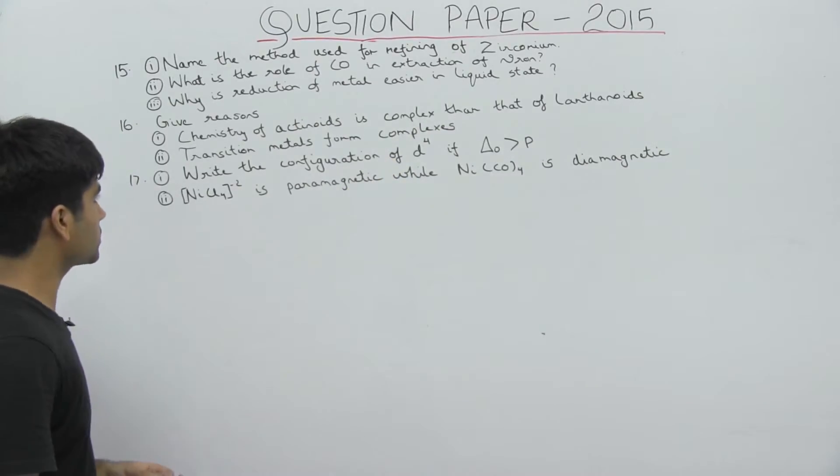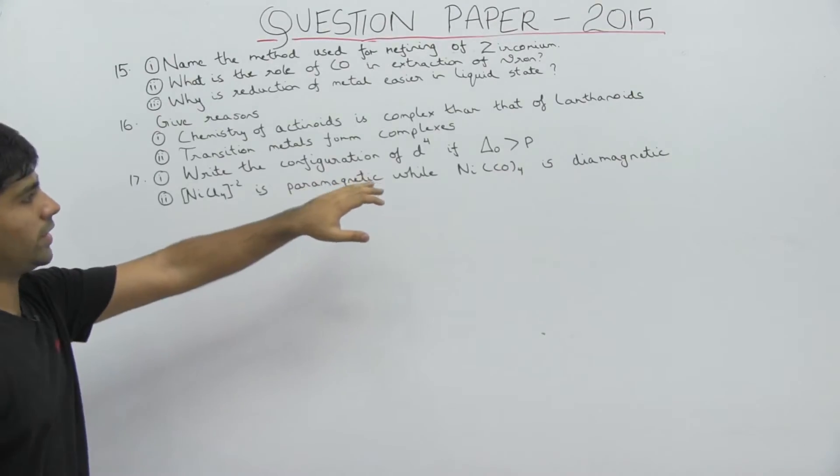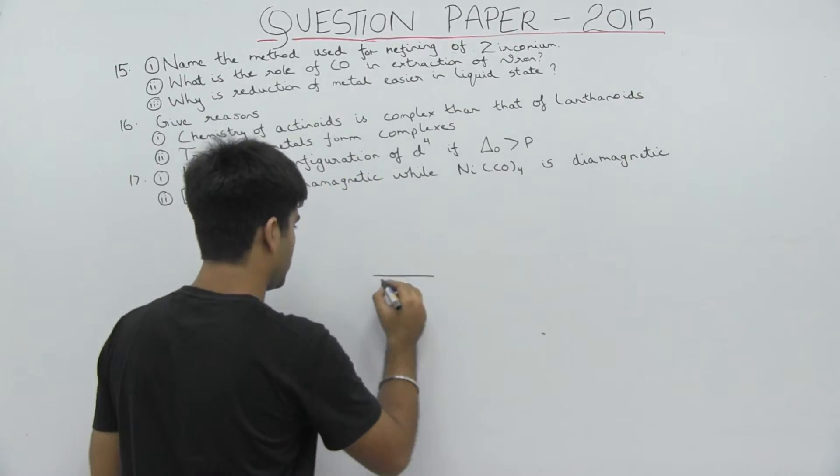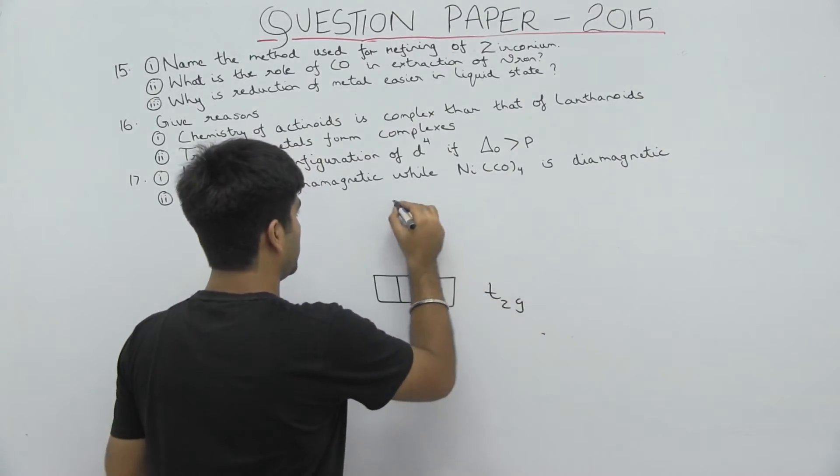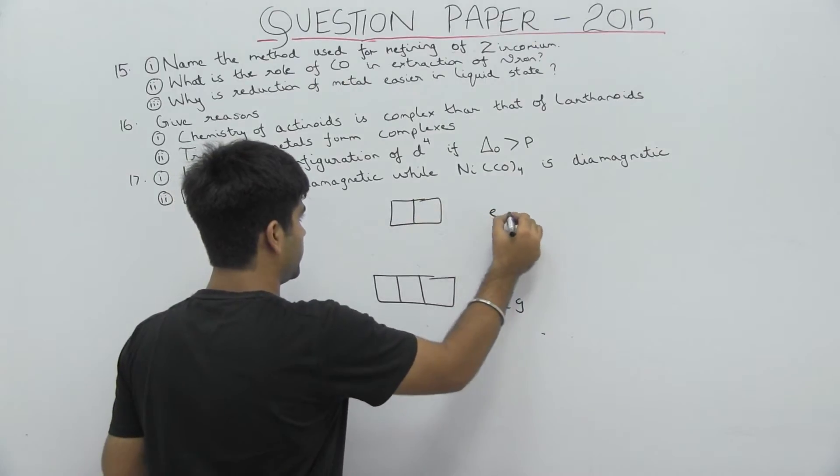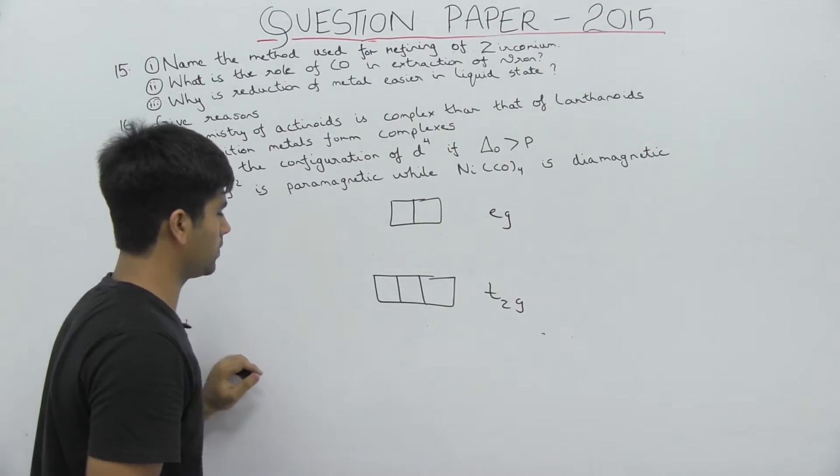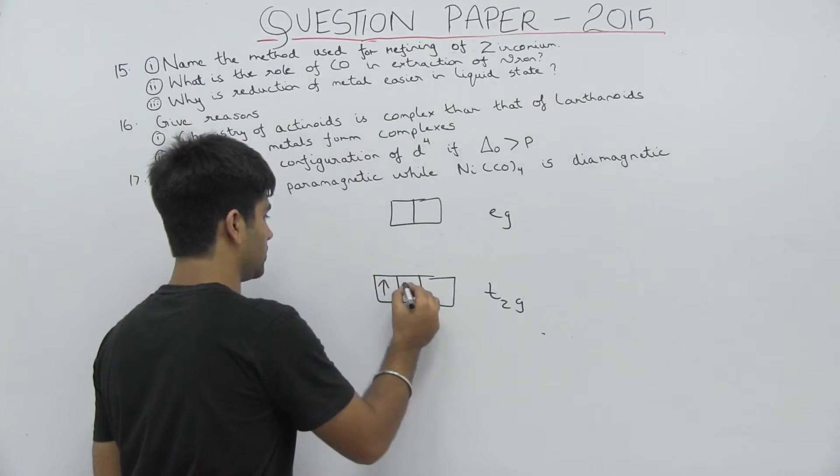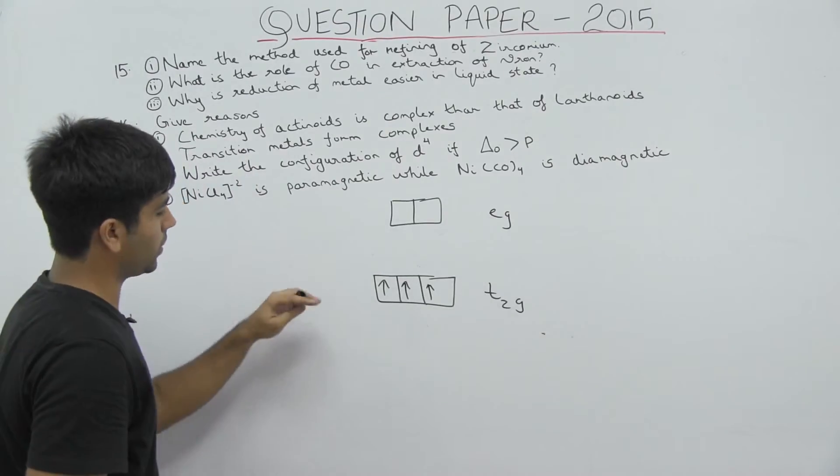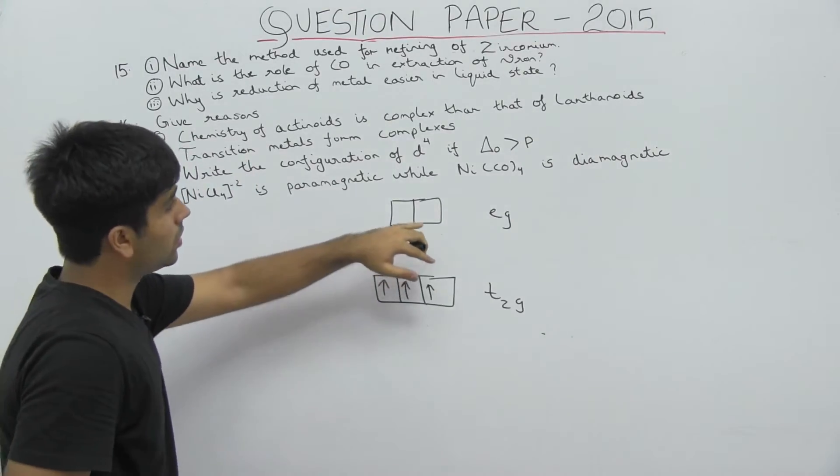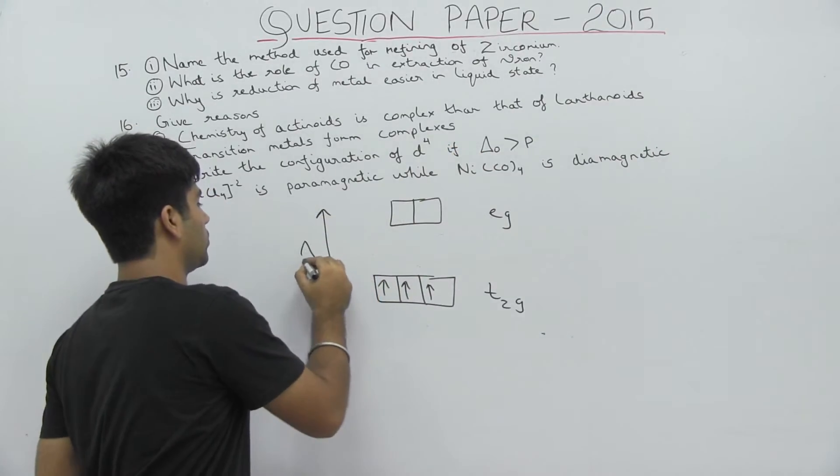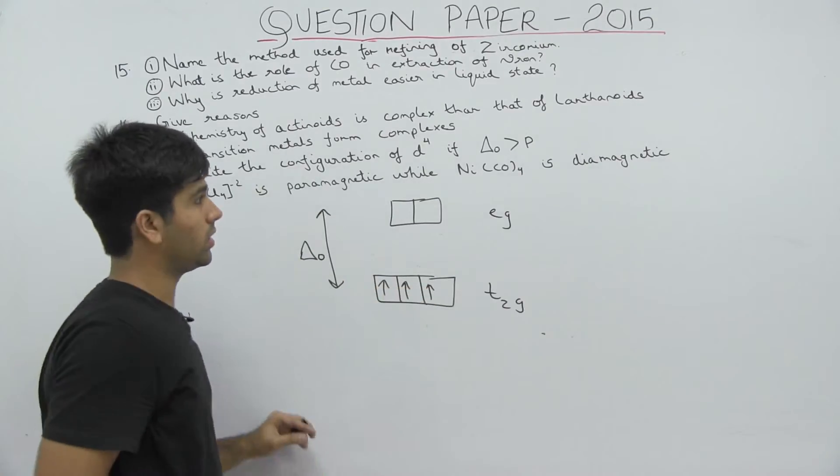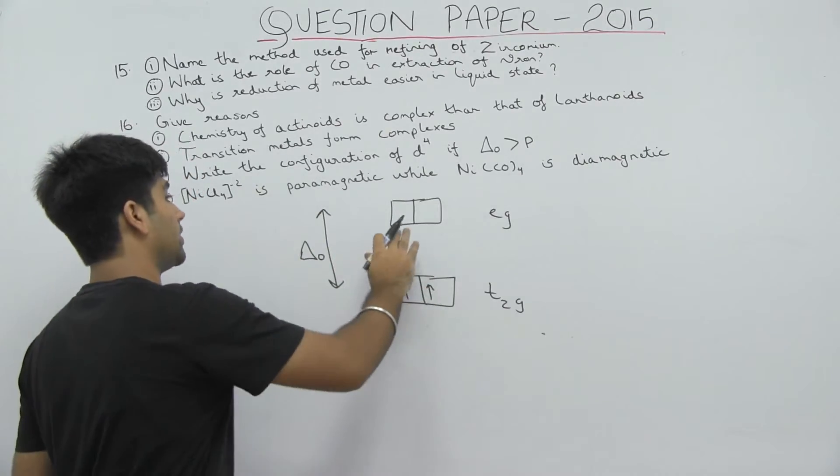Write the configuration of d4 if delta-not is greater than P. The first three electrons will be in the first three orbitals, and when the fourth electron comes, the only choice is either to pair it or go to eg. Because delta-not is greater than P, it will be more favorable to pair it in comparison to going to eg, so it will pair.